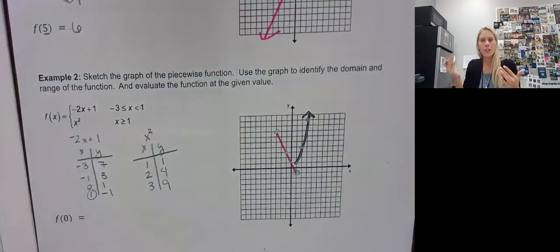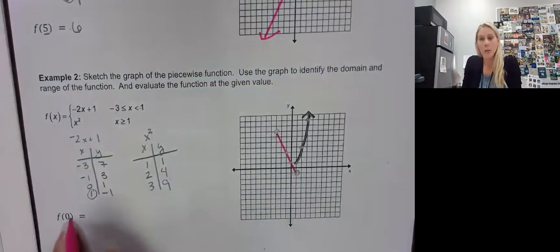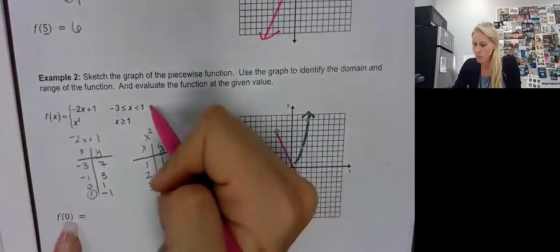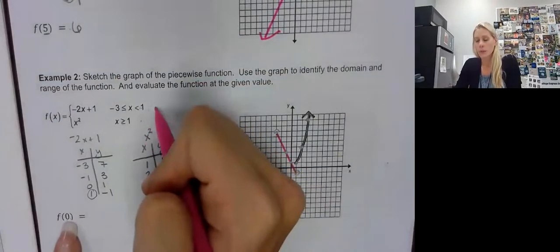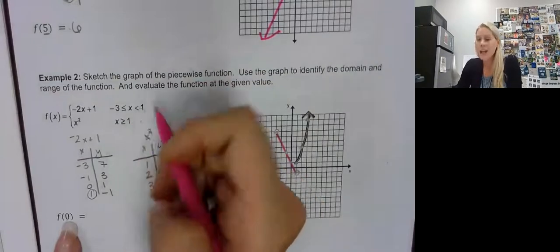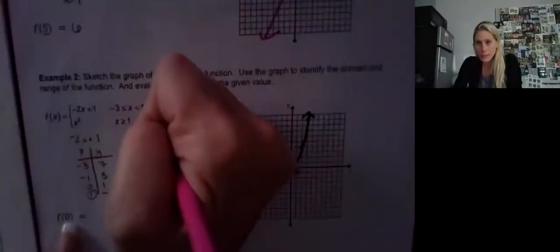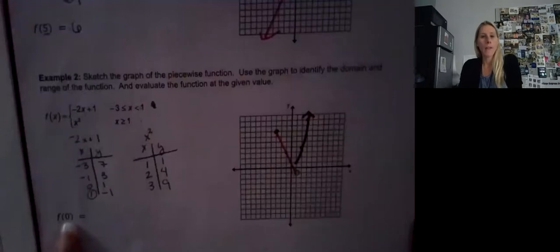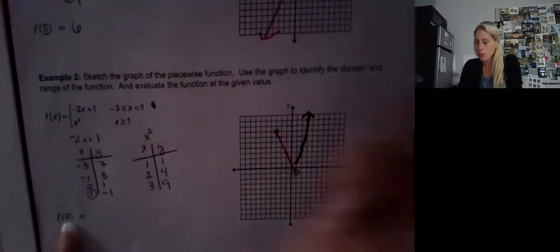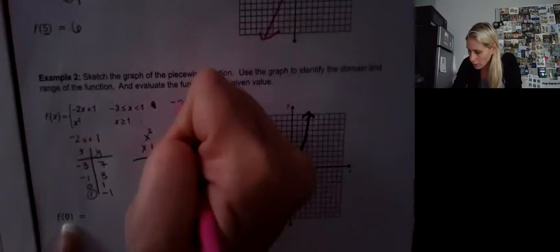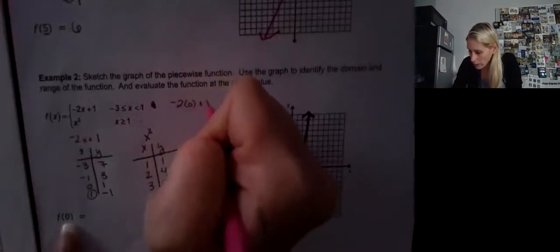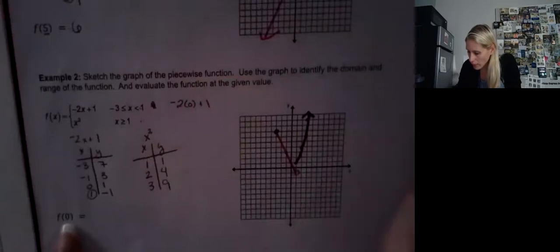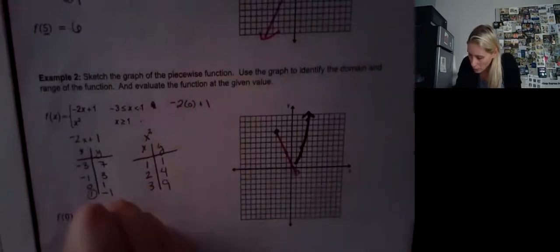You've got to think about the function or the piece you are looking at, because from far away this almost doesn't look quadratic, but it is. Now let's do f(0) the algebraic way. x is 0 — in which of these functions would we include x equal to 0? Well, 0 is not greater than 1, so we have the top function. Plug in 0 there: negative 2 times 0 plus 1, and we get the value of 1.